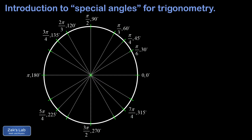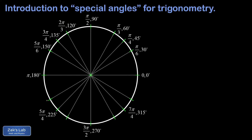The next angle is 30 degrees less than 180: 180 minus 30 is 150 degrees. In radians, pi minus pi over 6 — that's 6 pi over 6 minus pi over 6, giving 5 pi over 6. Moving into the third quadrant, adding 30 degrees to 180 gives 210 degrees. In radians, pi plus pi over 6 is 6 pi over 6 plus pi over 6, giving 7 pi over 6.